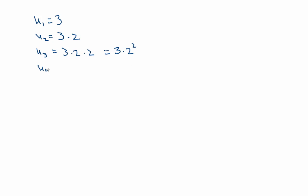If I want to find U4, well, that's simply, I take my third term and I multiply it by 2, which is taking 3 times 2 to the power of 3, because this here gets multiplied by 2.